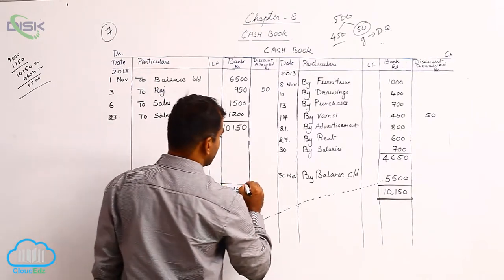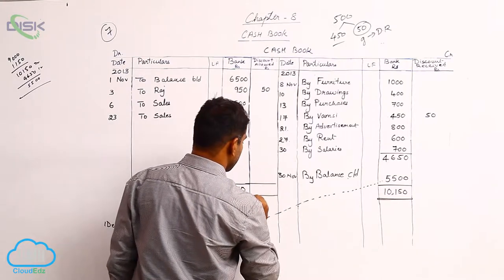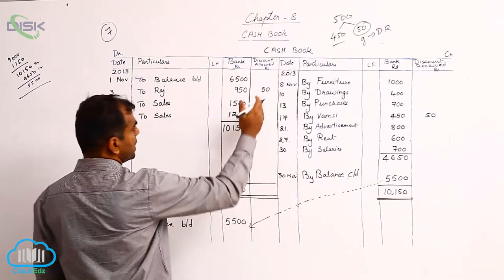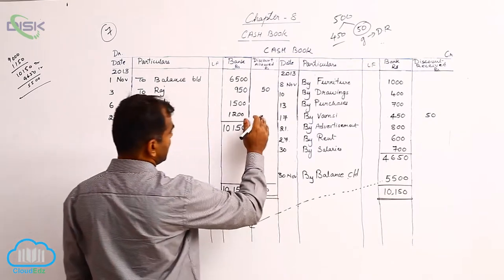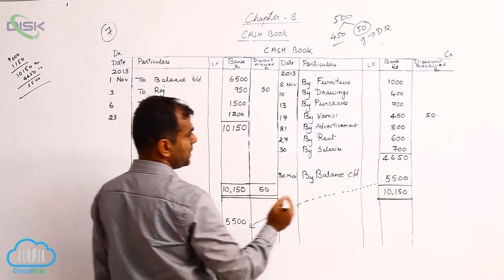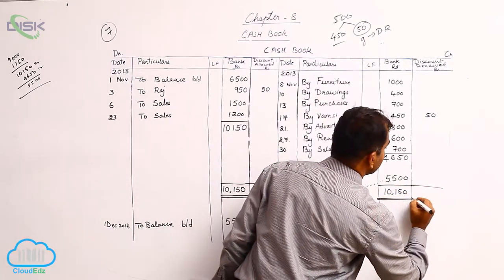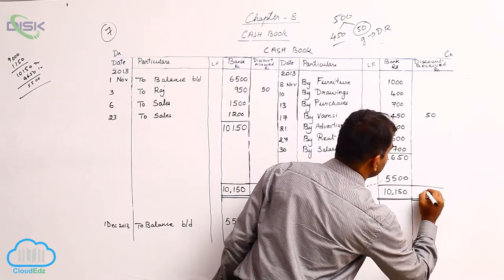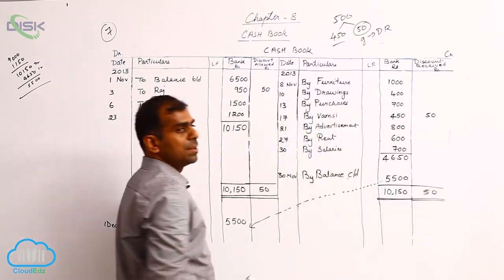Now let us close the discount column. So as usual you need to just total discount and leave it. So debit side we have discount allowed as 50 and credit side we have discount received as 50. Nothing to do beyond that.